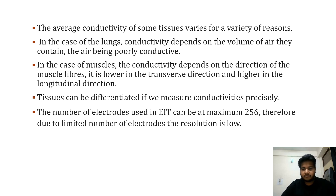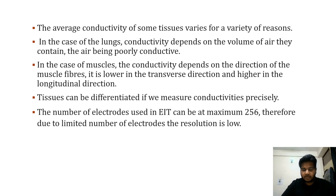In the case of muscles, the conductivity depends on the direction of muscle fibers — if they are aligned in the transverse direction, conductivity will be lower, and if aligned in the longitudinal direction, conductivity will be higher. So if we want to differentiate between different types of tissues in the body, we can do that by measuring conductivities precisely. A tissue is nothing but a collection of many cells joined together.